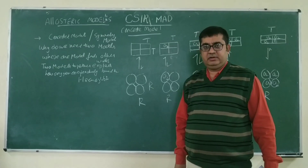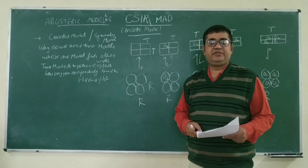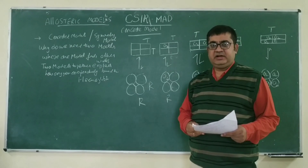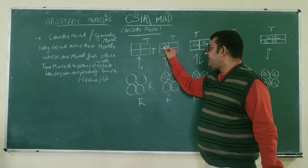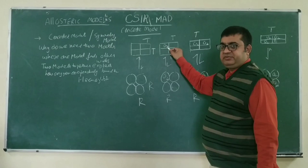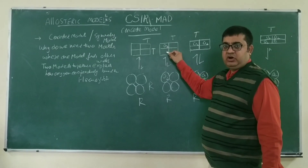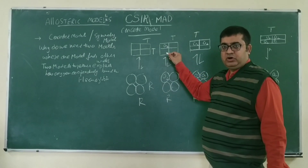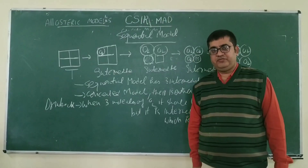There are many drawbacks of this concerted model. One of the drawbacks is that when there is oxygen binding at one subunit, there should be a conformational change in the adjacent subunits, which is not explained by the concerted model. So that is one of the drawbacks of the concerted model.